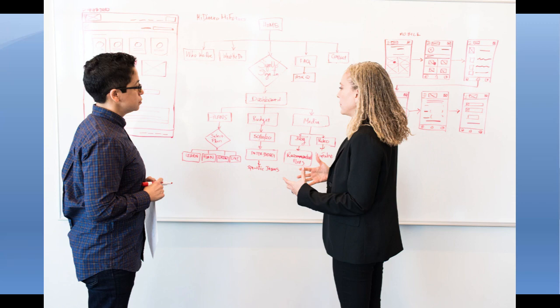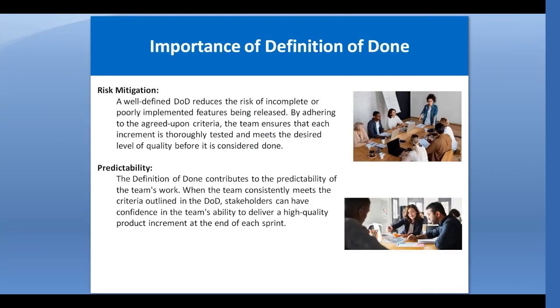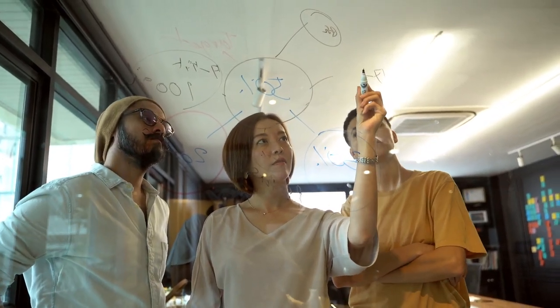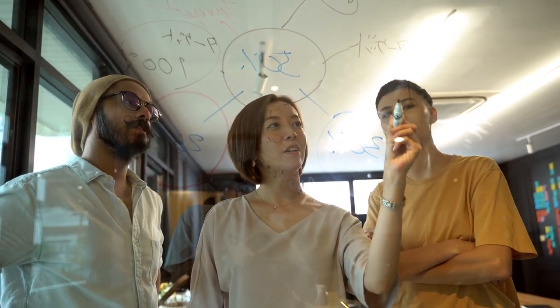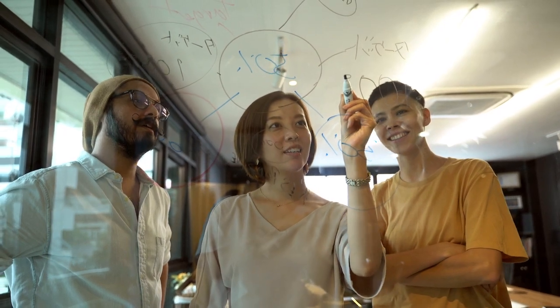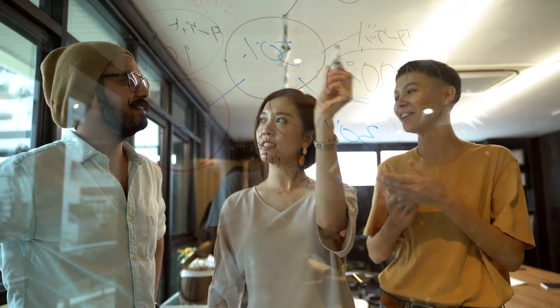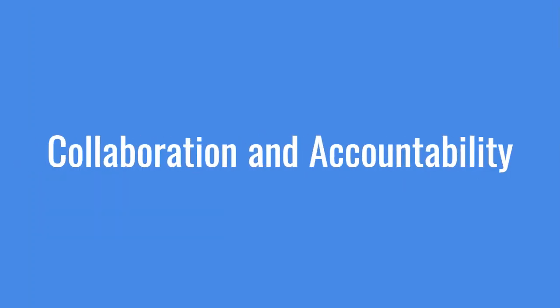Predictability means that when the team consistently meets the criteria outlined in the Definition of Done, stakeholders can have confidence in the team's ability to deliver a high-quality product increment at the end of each sprint. It becomes a sense of confidence for both team members and stakeholders, because they know, for example, that a transaction already implemented in three seconds will be available in the next sprint as well.